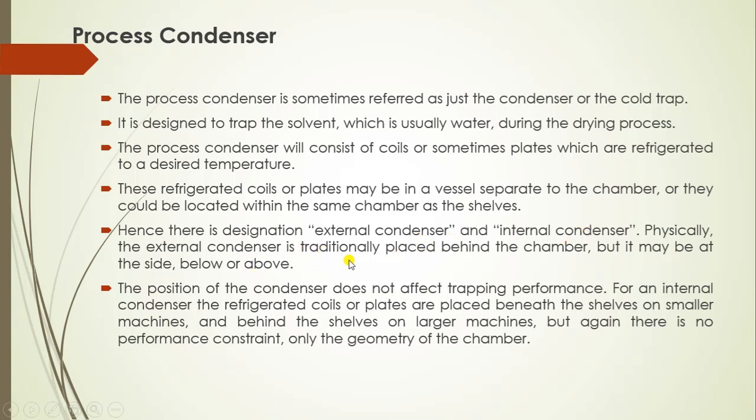Physically, the external condenser is traditionally placed behind the chamber, but it may be at the side, below, or above. The position of the condenser does not affect the trapping performance. For an internal condenser, the refrigerated coils or plates are placed below the cells for a smaller machine and behind the cells for a larger machine. But again, there is no performance constraint — only the geometry of the chamber varies.